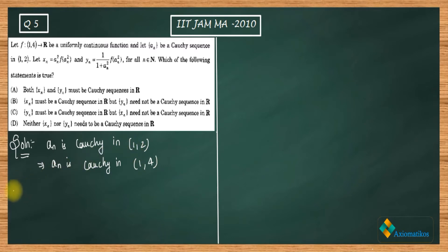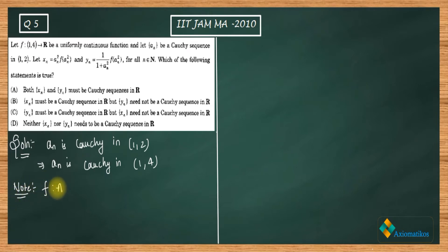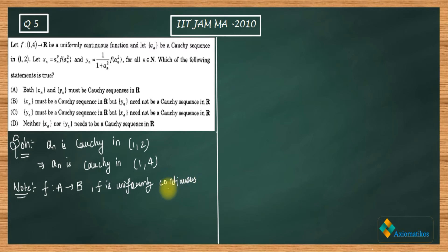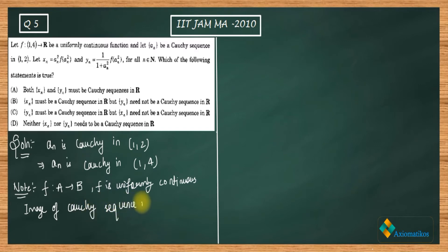The most important result we will be using here is simple and easy to remember. We will just state it: under a uniformly continuous function — suppose f is a function from A to B and f is uniformly continuous — the image of a Cauchy sequence is a Cauchy sequence. This is the key result we will apply.